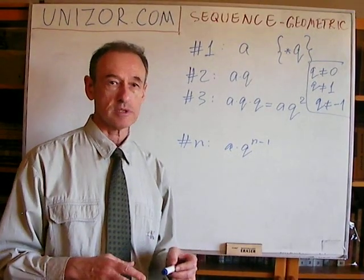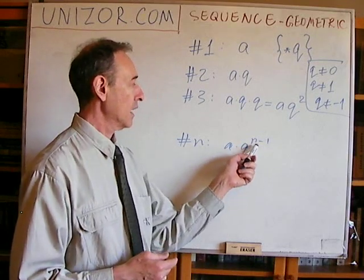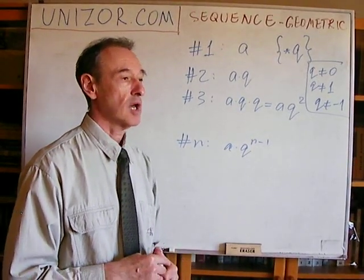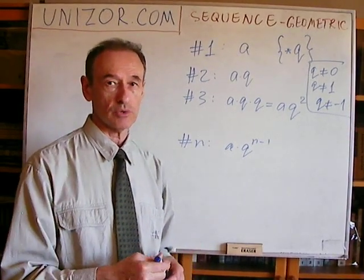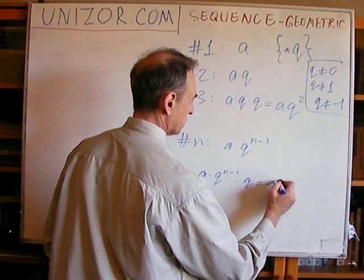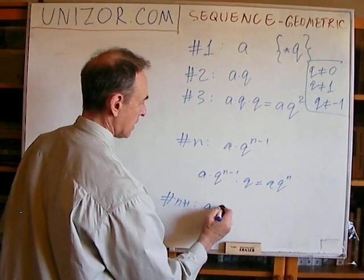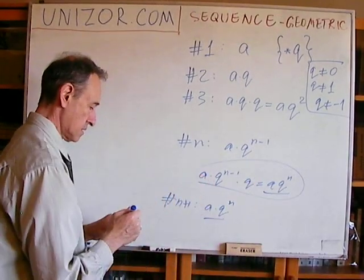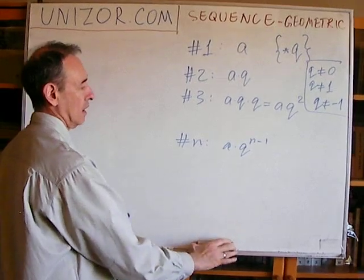What are the characteristic properties of geometric progression? Element number one is a. Substituting n equals one gives q to the power of zero, which is one, so we get a — that checks out. The second property is that each subsequent element equals the previous one multiplied by q. Indeed, if you multiply a times q to the n minus one by q, you get a times q to the nth degree, which matches the formula for the n plus one th element.